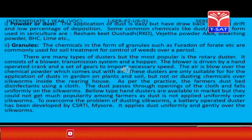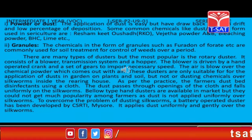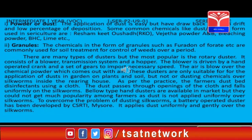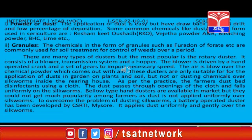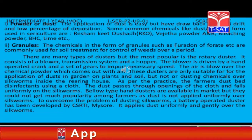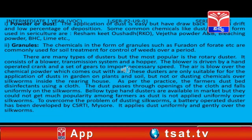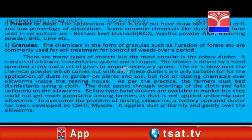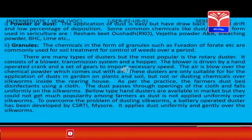Liquids: Most of the chemicals used in agriculture are in liquid form, for the reason that small quantities could be spread over a large area by dilution with water. The major advantages of using chemicals in liquid form are uniformity in application, high deposition, liquids could be put exactly on target, and soil pollution is less.